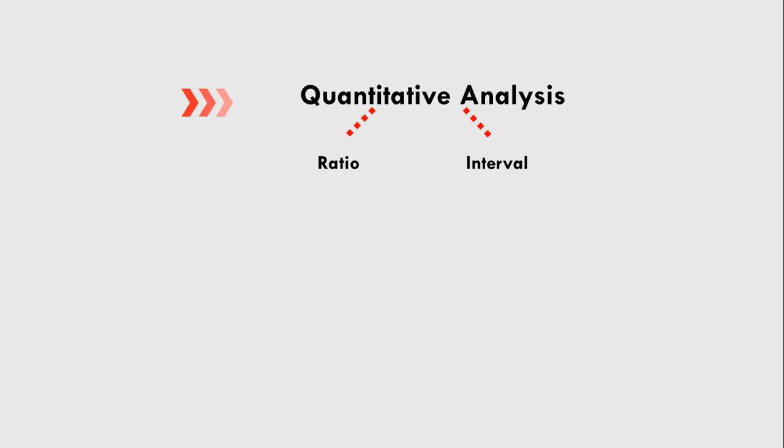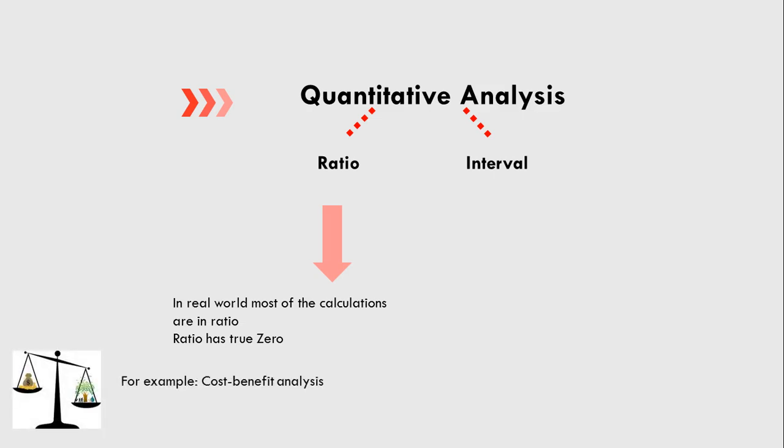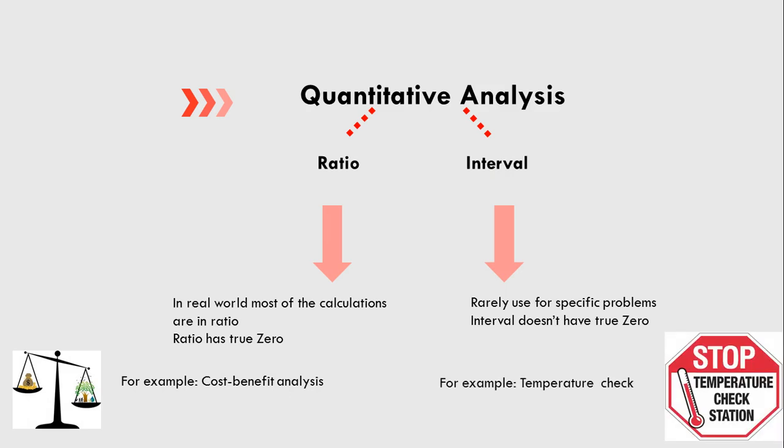In real world, most of the calculations are in ratio. Ratio has true zero, for example cost-benefit analysis. On the other hand, interval is rarely used for specific problems and interval doesn't have true zero, for example temperature check.